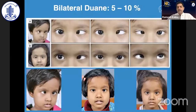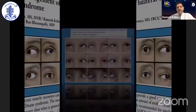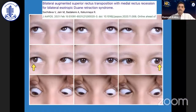For bilateral esotropic Duane, the medial rectus is almost always tight. This amounts to a very small group — five to 10%. We do bilateral medial rectus recession, which gives good correction. In our experience, we dose a little more than for standard infantile esotropia, but one should be very careful with a tight muscle — even 0.5 mm can make a real difference. More recently, accepted in JAAPOS, we are doing bilateral medial rectus recession and bilateral superior rectus transposition in bilateral esotropic Duane, which significantly improves abduction in these patients.